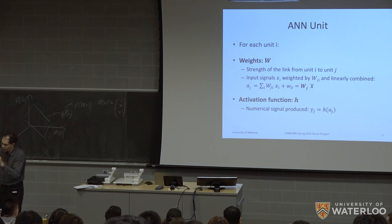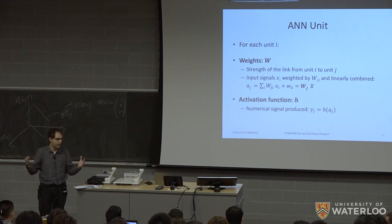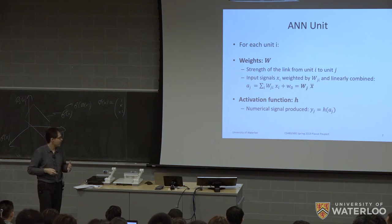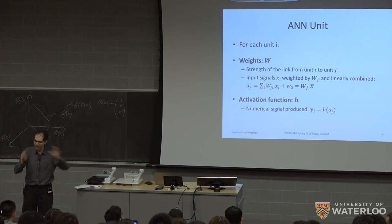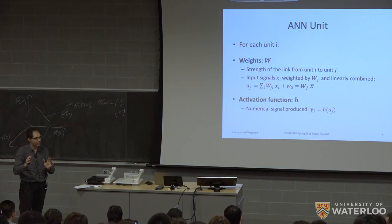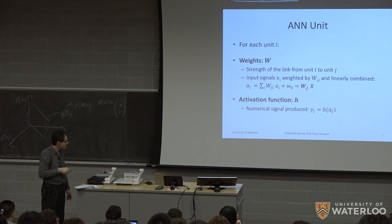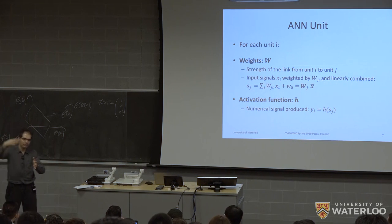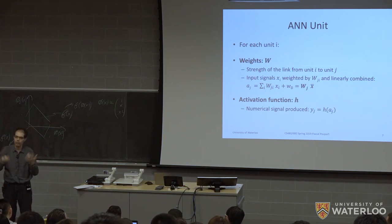This new signal a_j is not yet the output. To make the neural network able to compute a wide variety of things, we want something non-linear, so we introduce an activation function h. Here h denotes an activation function — it takes a_j as input and changes it in a non-linear way to produce y_j. Together we have a linear combination passed through a non-linear function to produce the output, and this is what every node in the network more or less does.